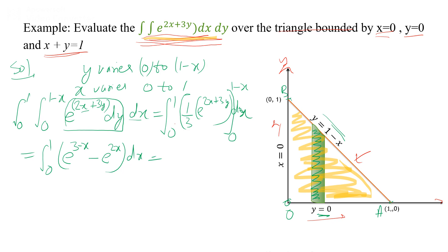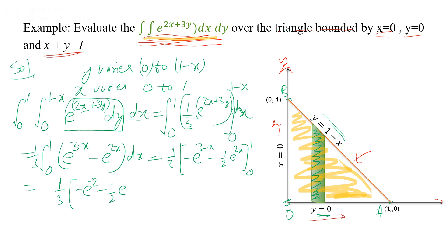Now taking the integration with respect to x, we get (1/3) times [minus e^(3-x) minus (1/2)e^(2x)] with the limit applied from 0 to 1. On simplification we get (1/3) times [(1/2)e^2 + e^3 + (1/2)e^0]. Simplifying further, the final answer is 1/6.